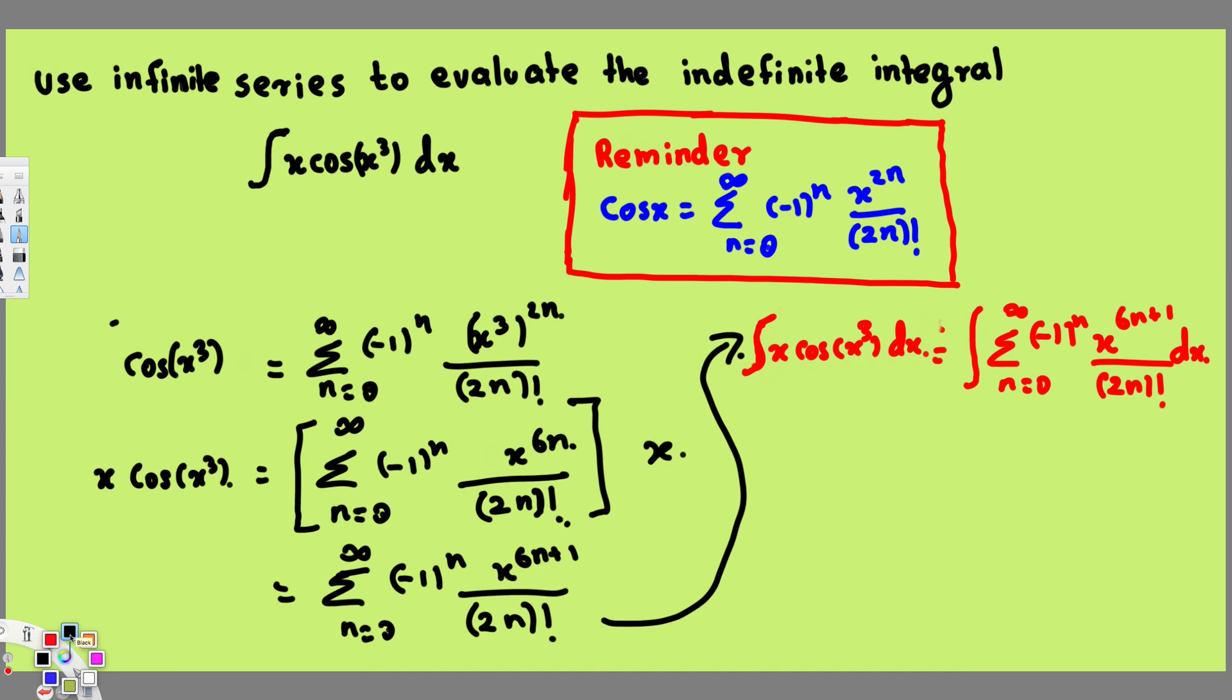That's why this is the only one that's going to be integrated. So the integration is going to be like this: summation n equals 0 to infinity, and (-1)^n, the others are going to remain the same. (-1)^n, x^(6n...